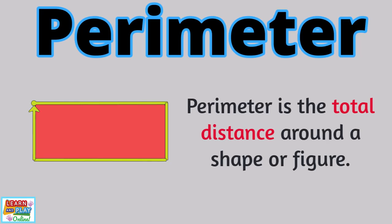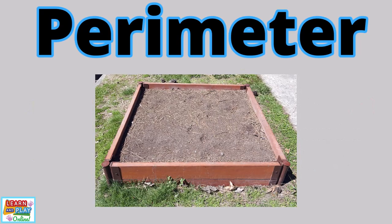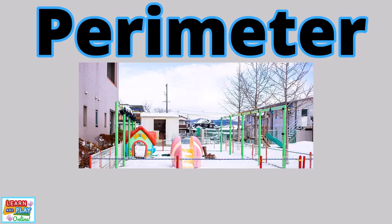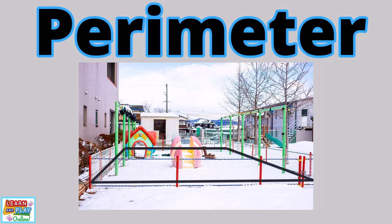Perimeter is used in many real-life situations. For example, if you were constructing a garden bed, you would need to calculate the total distance around your garden bed so that you can order and purchase the correct amount of materials needed to make the frame. Another real-life example of perimeter is the fencing around a playground. In order for the fencers to build a safety fence, they would have needed to measure the total distance around the playground, which is the perimeter.